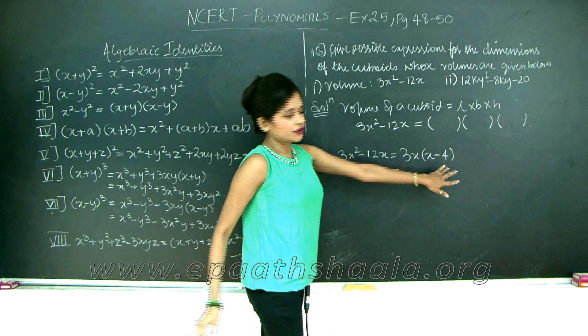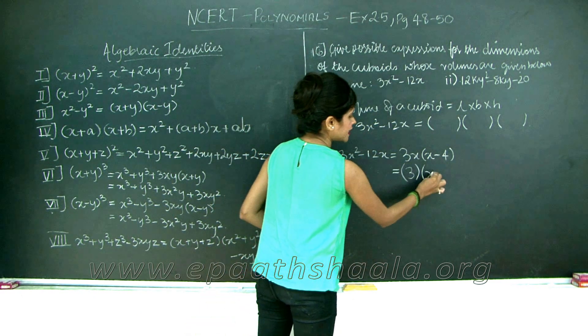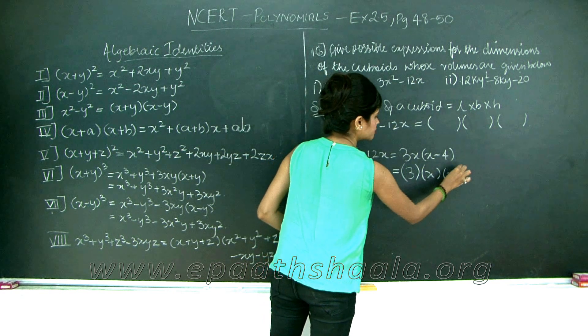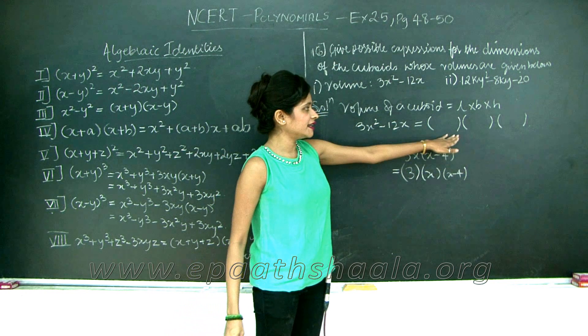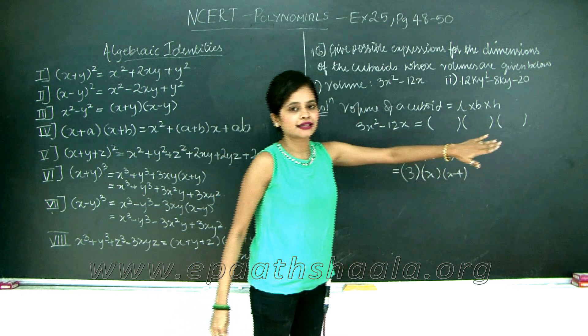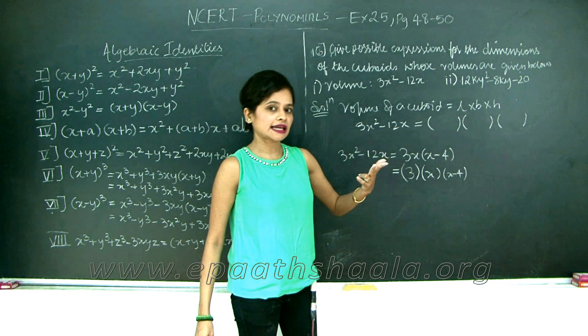Now x minus 4 cannot be further factorized, so I will write the first term as 3, the second term as x, and x minus 4. Why did I write it in the form of 3 terms? Because I need 3 factors: one for length, one for breadth, and one for height. That is the dimensions.